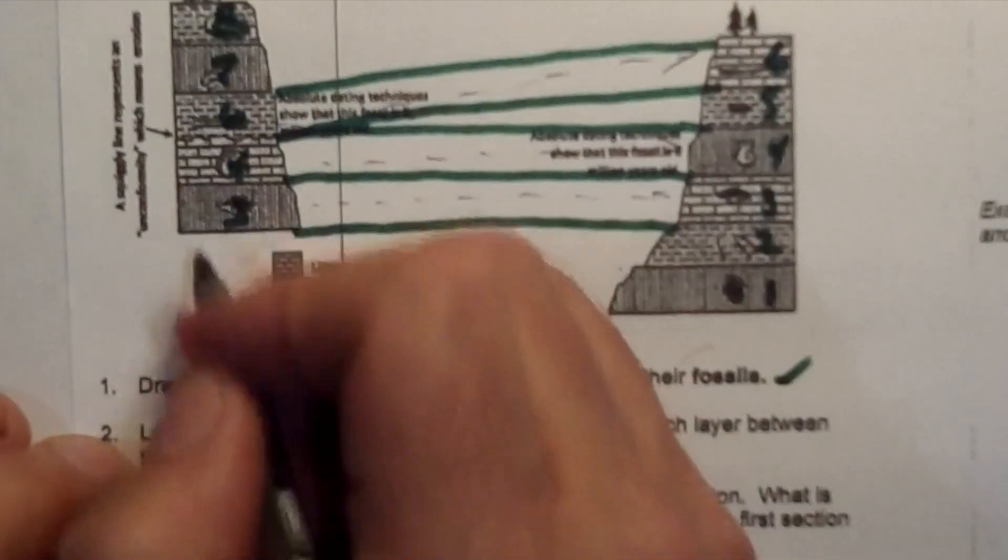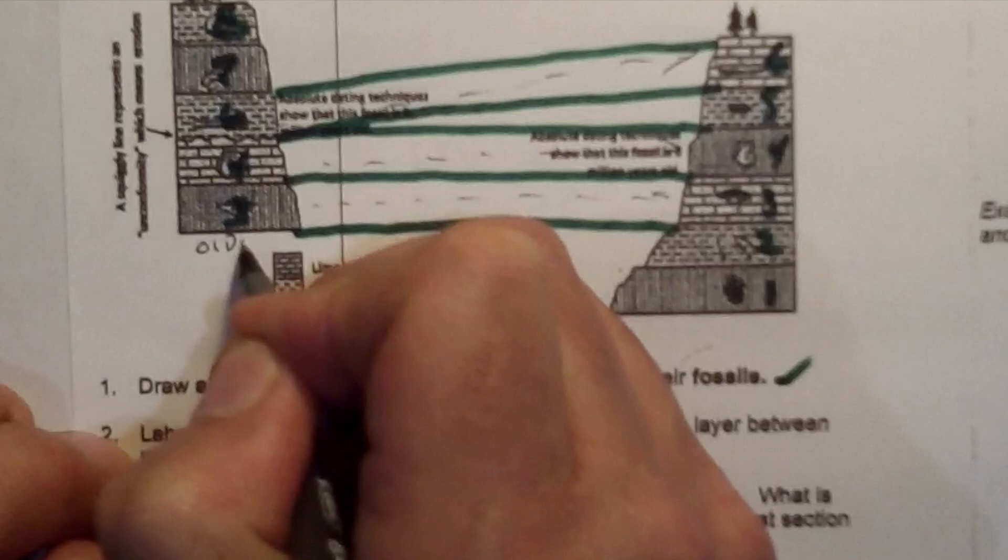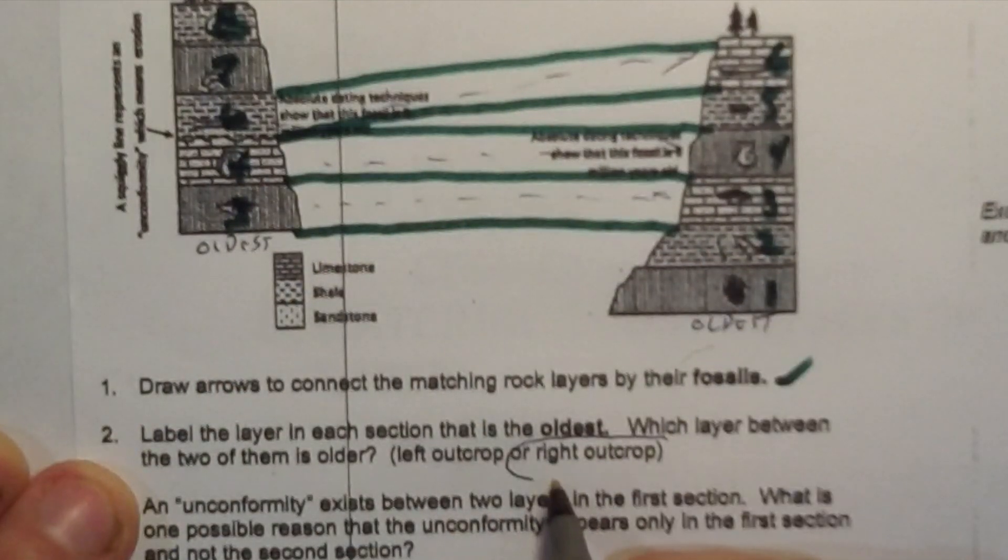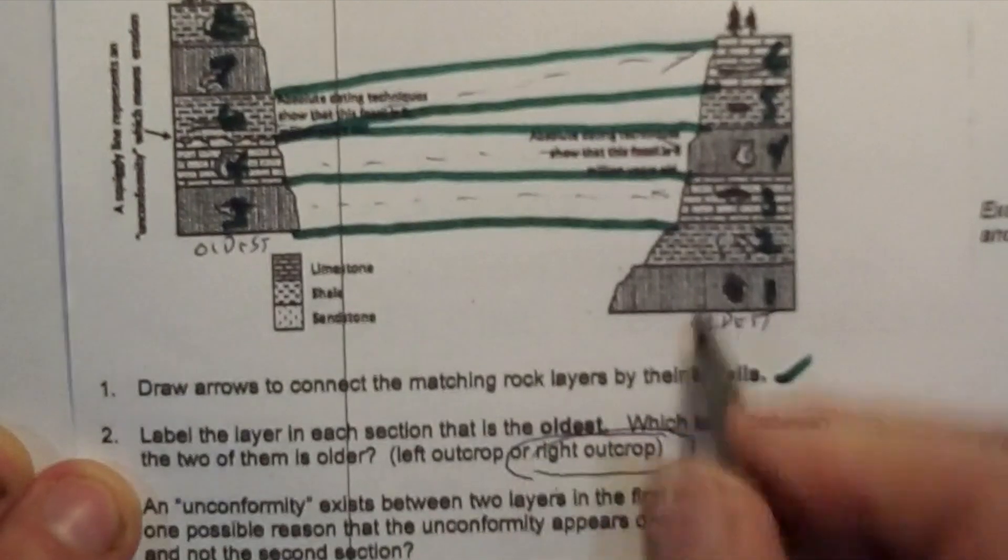Label each layer which is oldest. This would be oldest over here, this would be oldest over here. Which layer between them is older would be the right outcrop, because this one has the lower number.